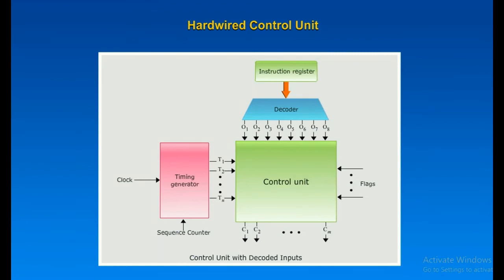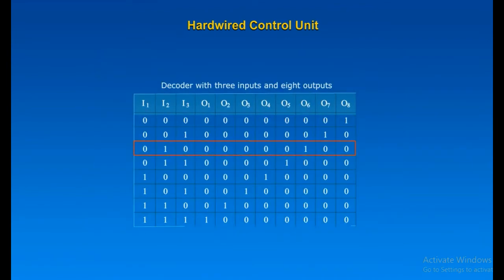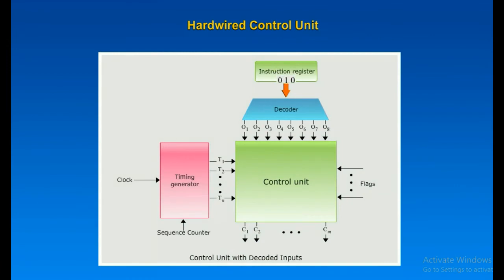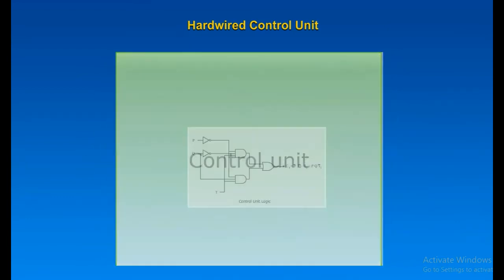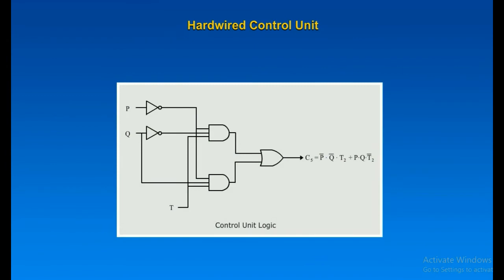Each of the 2^n different input patterns will activate a single unique output. For example, with a 3×8 decoder, input 010 produces output O2, which goes into the control logic that generates a combination of control signals. The decoder for a control unit will typically have to be more complex to account for variable-length opcodes. An example of the digital logic used to implement a decoder is shown.